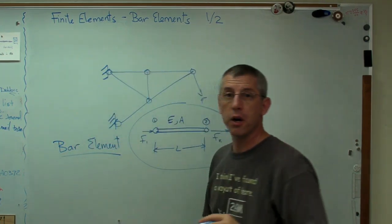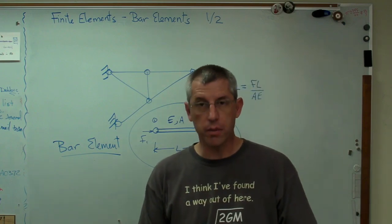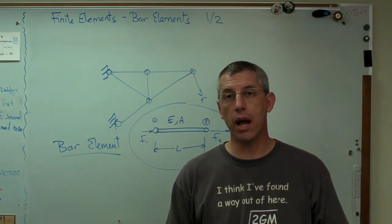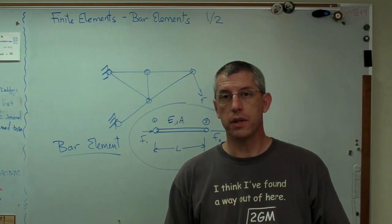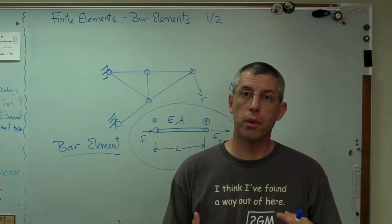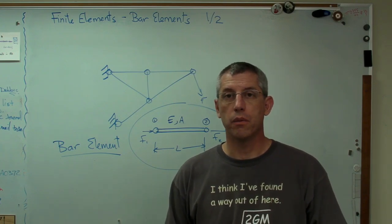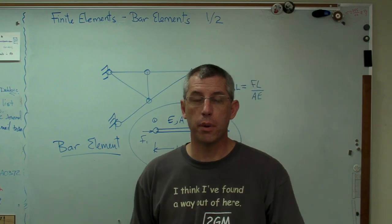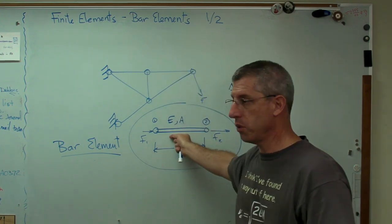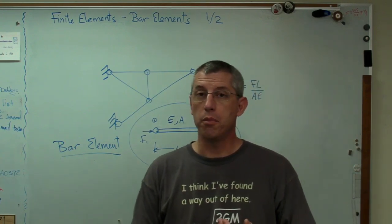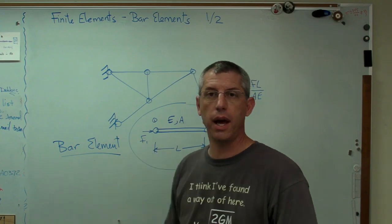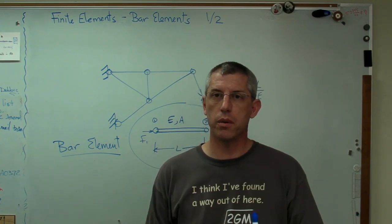It's important to know the lingo because there are different kinds of elements built into finite element programs. They have something called a finite element library - a list of elements built into the software that you can use to assemble a structure, and there are elements with different properties. Bar elements are the simplest ones. There are beam elements that can have bending and moments at the end, but they're still essentially one-dimensional.